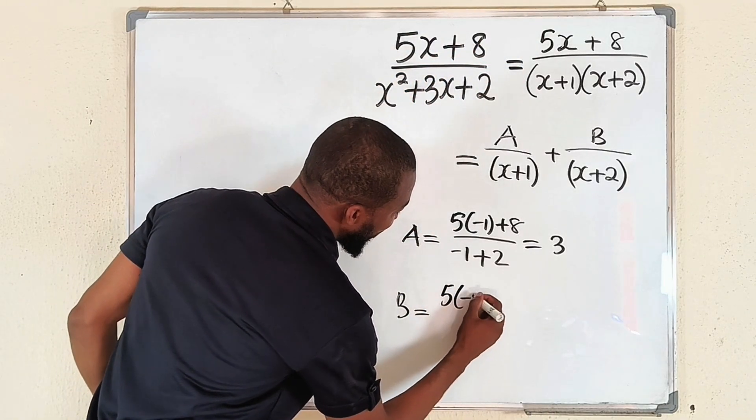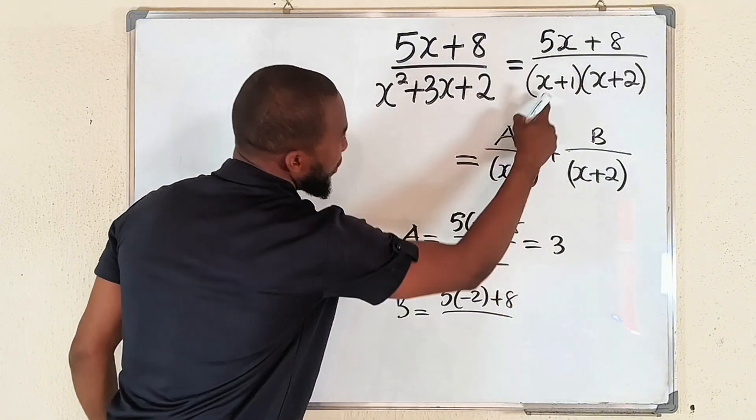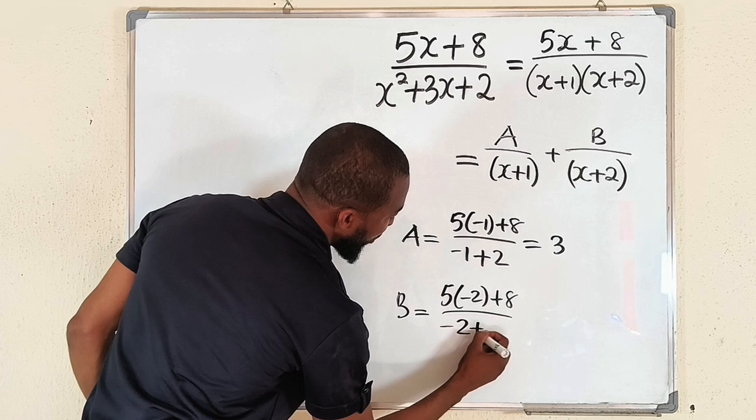5 times minus 2 plus 8, divided by - use this one - remember it is minus 2 then plus 1.